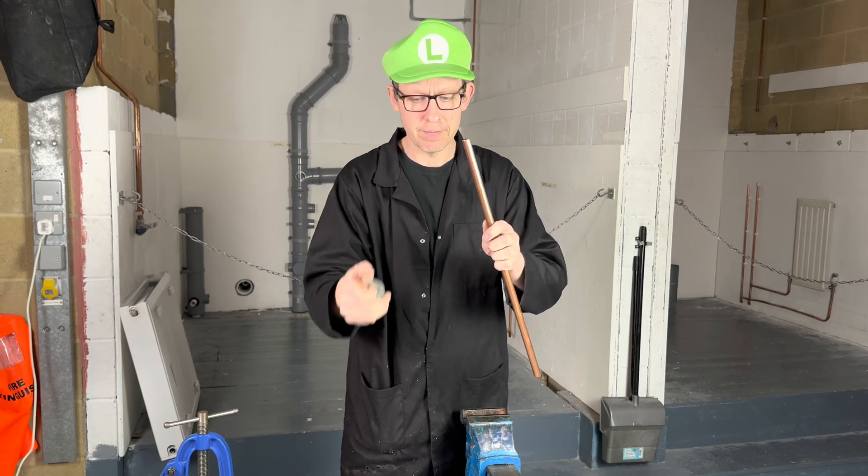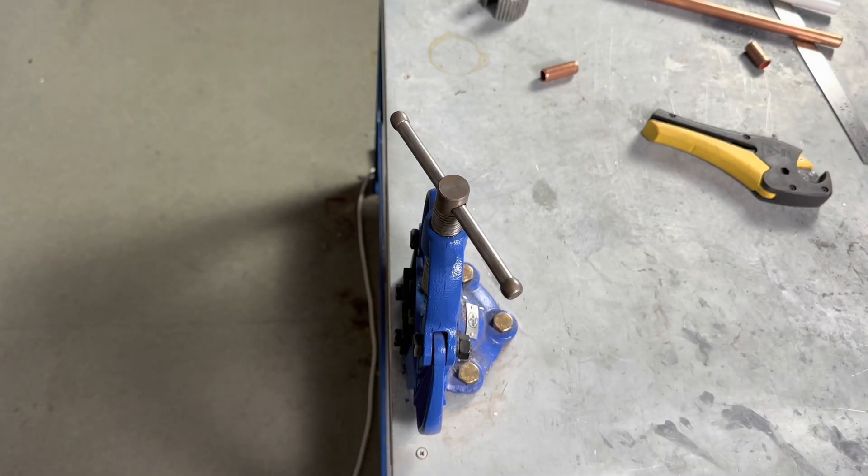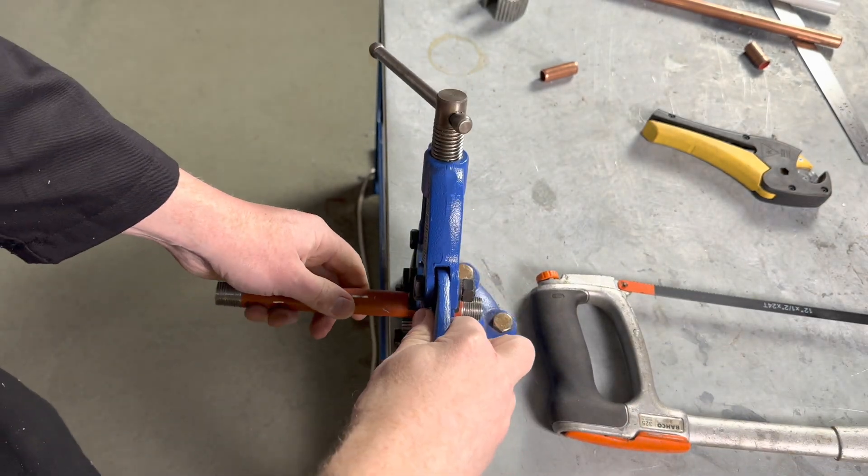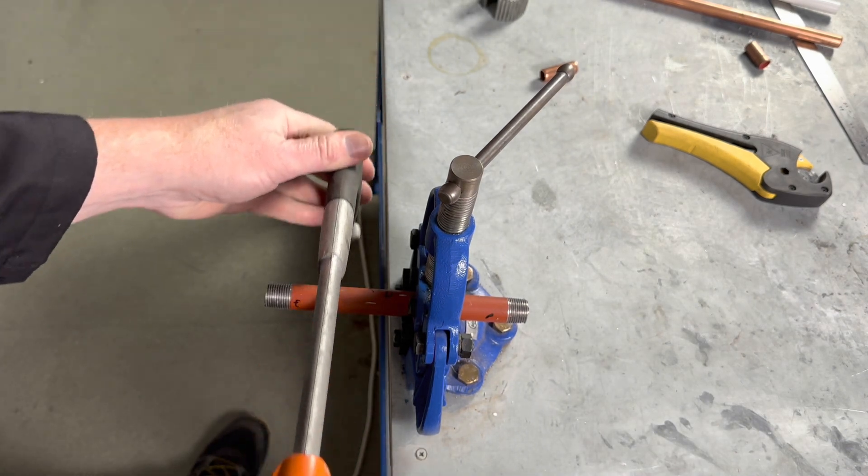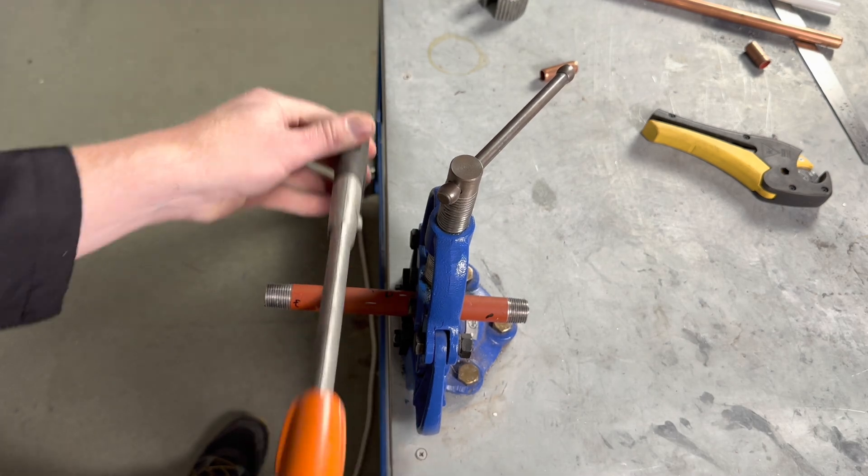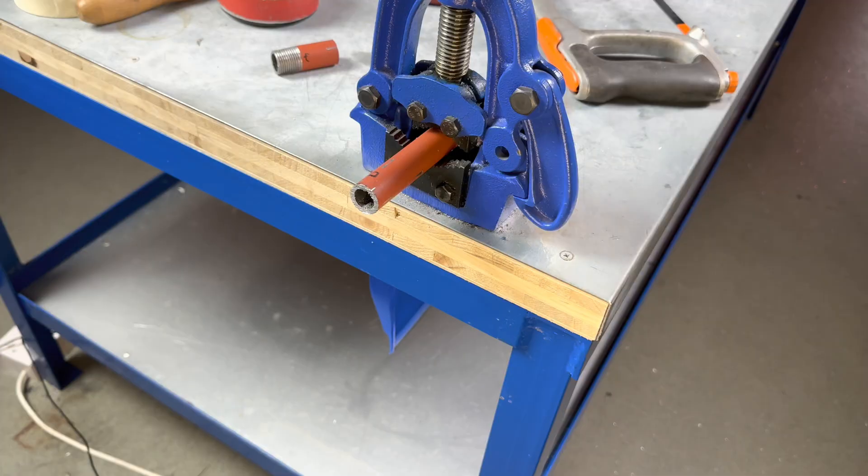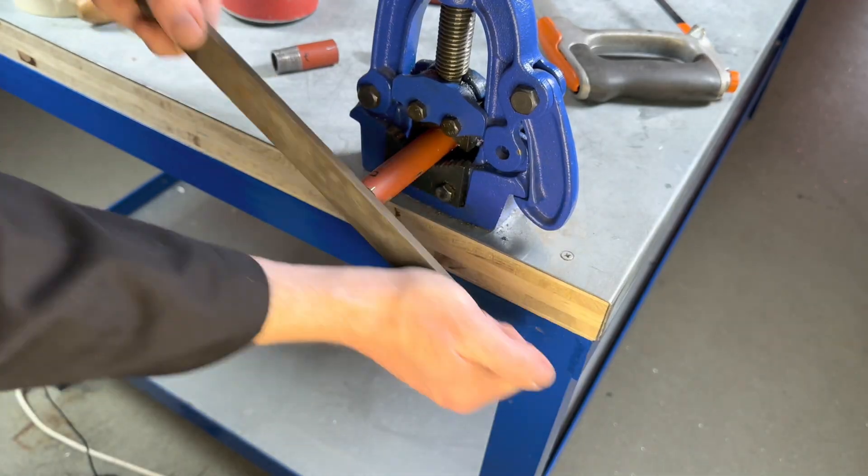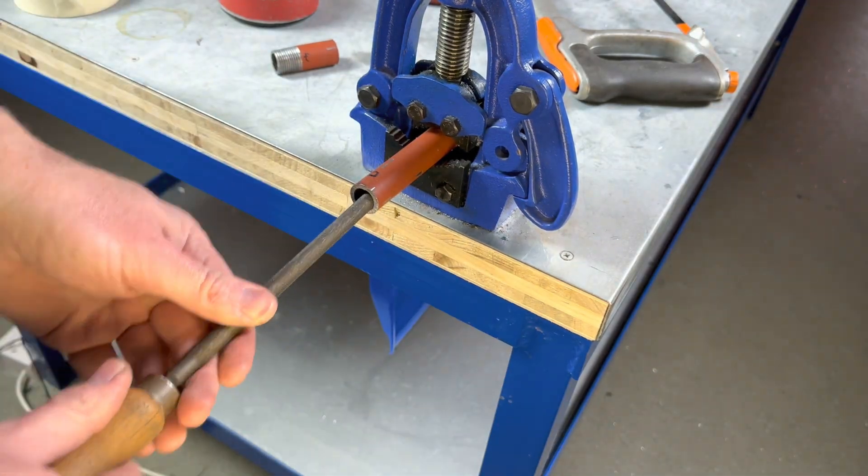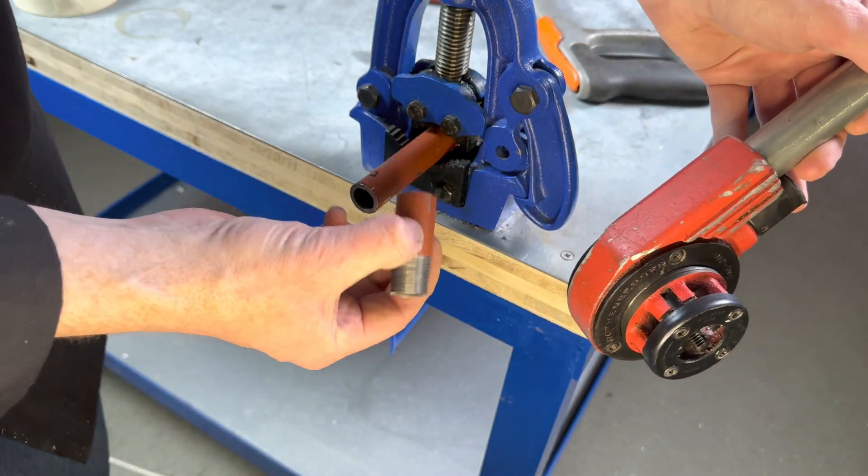But if we get our measurements wrong on low carbon steel, it's a very timely process. The reason it's timely is because we have to put the low carbon steel into a vise, saw it with a hacksaw, then you have to file it, and then you have to re-thread it. Put one of these back on to re-thread it.